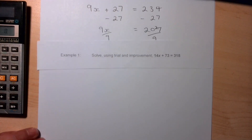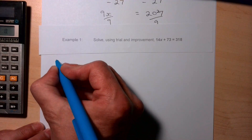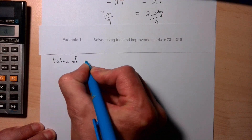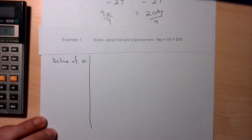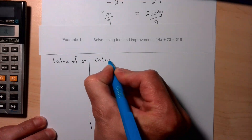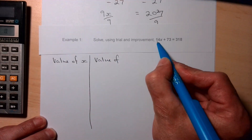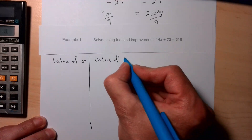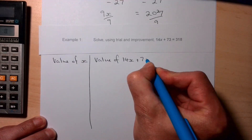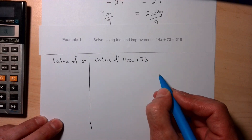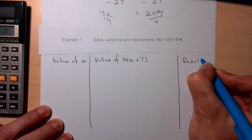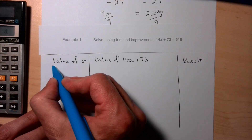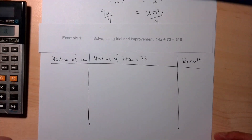We're going to set out a table with three columns. The first column is the value of x — the values we're going to try in our trials. The second column is the value of the left-hand side: 14x + 73 — make this column quite large because all our working out goes here. The third, smaller column is the result of our trials.